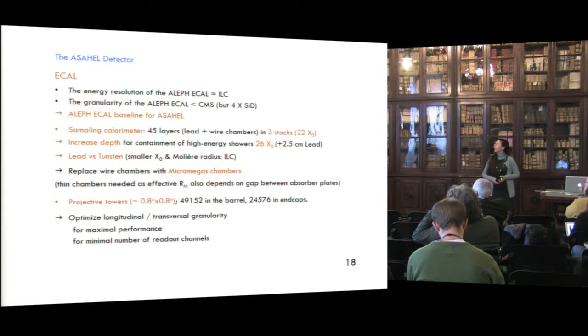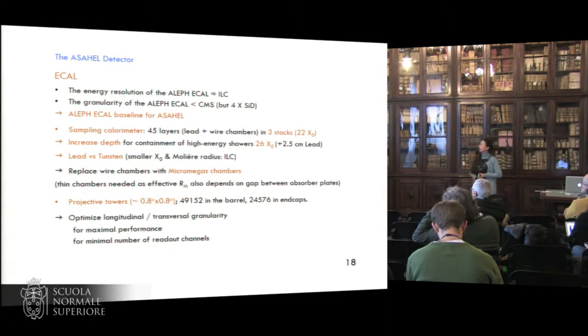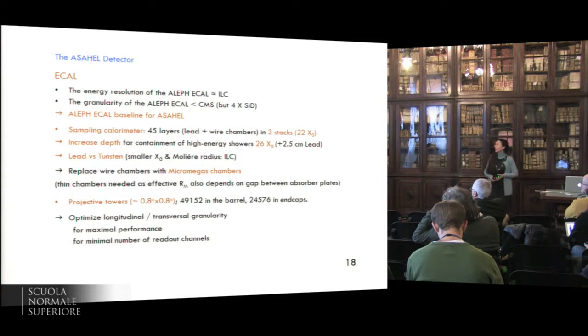As we have seen, the energy resolution of the ALEF ECAL or HCAL is comparable to that of ILC, and the granularity is better than that of CMS. However, one could keep the ALEF ECAL baseline for ASAEL. However, one may need to increase the depth of containment of high-energy showers. One should perhaps go from 22 radiation lengths to 26. We might think of replacing the lead by tungsten to take benefit of the smaller radiation length and Moliere radius, and then one would replace the wire chambers with Micromegas chambers. The projective towers that we had in ALEF could be kept, but one would have to optimize longitudinal transverse granularity for maximal performance and the minimal number of readout channels.